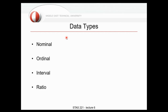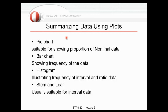For ratio data, the zero is absolute — like kilograms. If one person is 60 kg and another is 120 kg, we can say the second is twice as heavy. Multiplication operations are valid for ratio data. You can see the key difference between interval and ratio here, as we described in class.